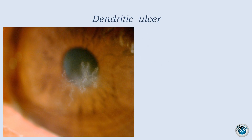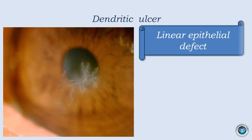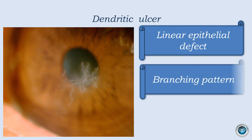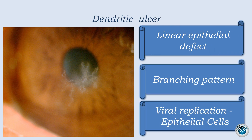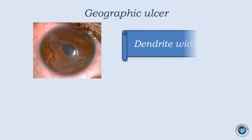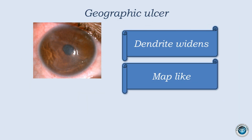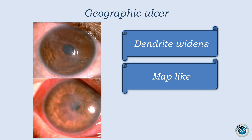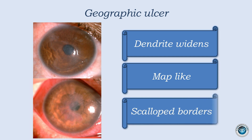As we know, classical dendrite is a linear epithelial defect with branching pattern, and virus replication is restricted to the epithelium only. When dendrites widen and take a map-like shape, it is known as a geographic ulcer. In any epithelial defect with scalloped margins, we must keep this as a differential diagnosis.